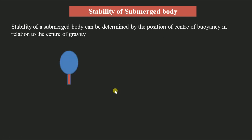Here I am assuming a balloon which is completely submerged in air. For this balloon, I am assuming the center of gravity position is below the center of buoyancy. In this condition, we get stable equilibrium for the submerged body. The balloon is in stable equilibrium because the center of buoyancy is above the center of gravity.